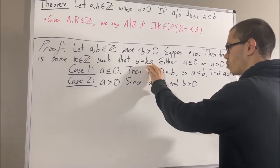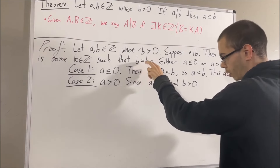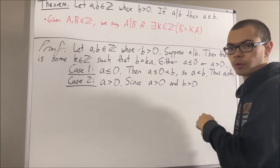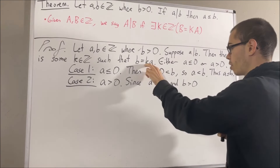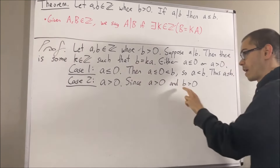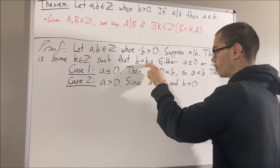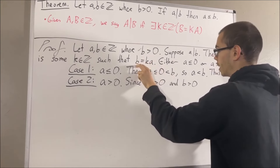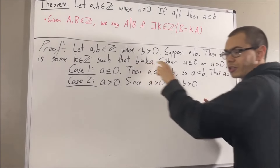With these two facts, let's investigate the equation b = ka. We know that either k is equal to zero, k is greater than zero, or k is less than zero. Our claim is that k is greater than zero. If k is equal to zero, then a times zero gives us b equal to zero, which contradicts the fact that b is greater than zero. On the other hand, if k is less than zero, then we have a positive number times a negative number, which results in a negative number — but that again contradicts the fact that b is positive. So we must have that k is greater than zero.